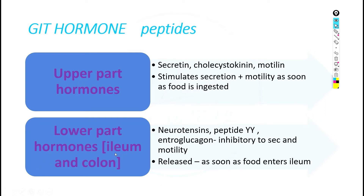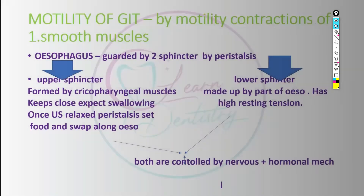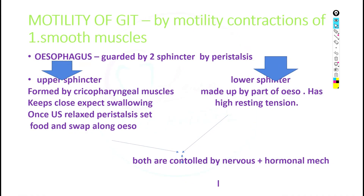The lower part hormones — from the ileum and colon — are neurotensin, peptide YY, and enteroglucagons, which are inhibitory to secretion and motility. So upper part hormones are stimulatory to secretions and motility, and lower part hormones are inhibitory. They are released as soon as food enters the ileum.